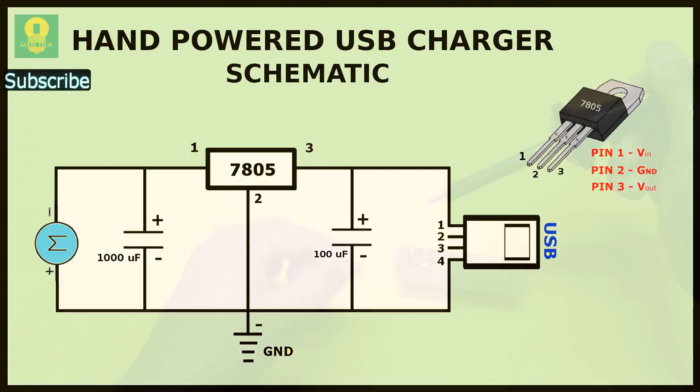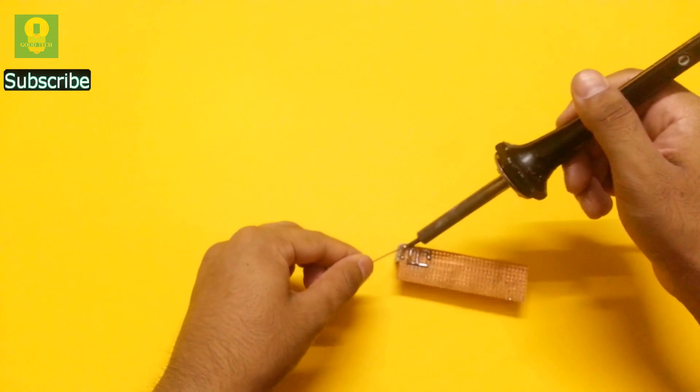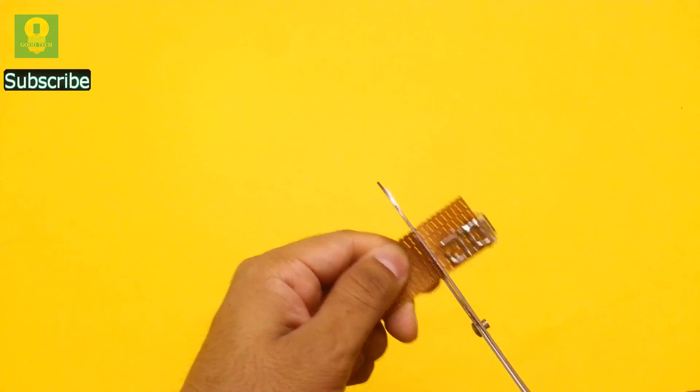Refer to the schematic and connect the USB port to the output of 7805 IC. Now cut the PCB of adequate size.